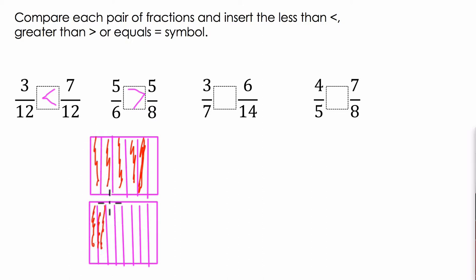Five-eighths is much smaller. Two, three, four, five. So if the numerators are equal, in fact, the smaller denominator makes the bigger number.